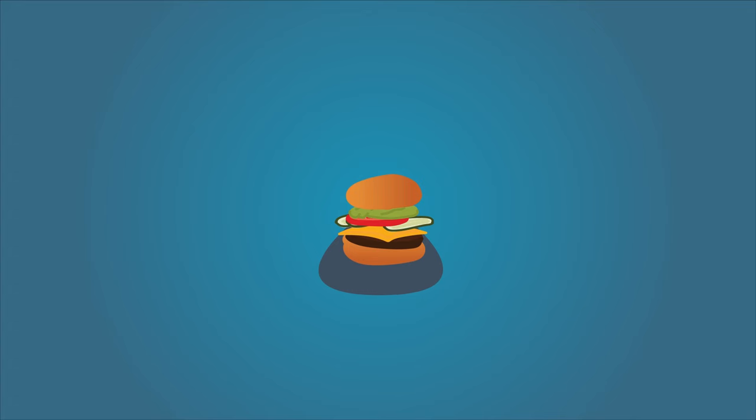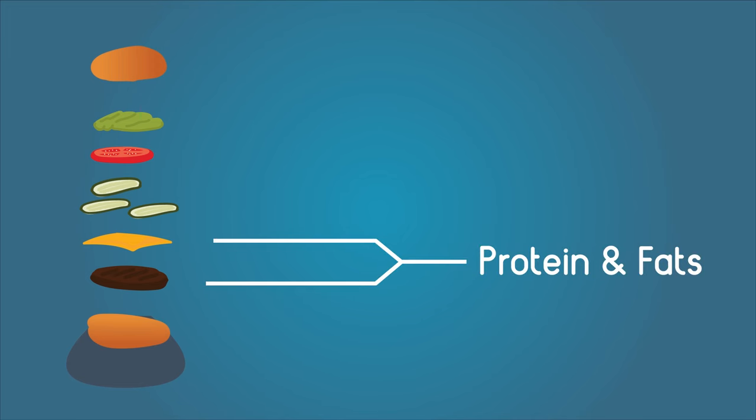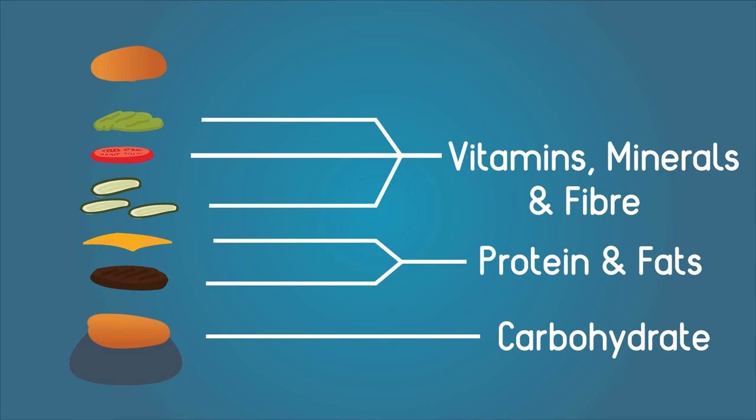Look at this juicy burger, doesn't it look appetizing? It has so many good things in it that my body needs: protein and fats in the meat and cheese, carbohydrates in the bun, vitamins, minerals, and fiber in the salad. But how can I use them? I need to get them into my blood, and this burger is never going to fit.